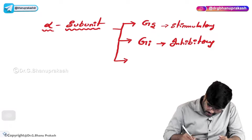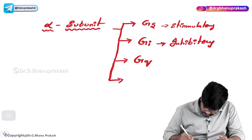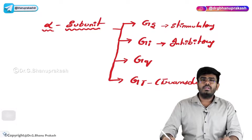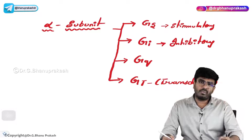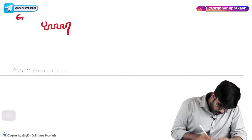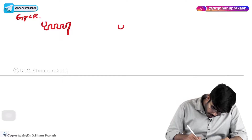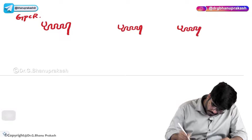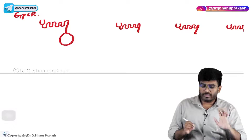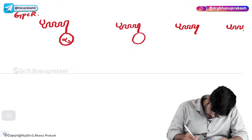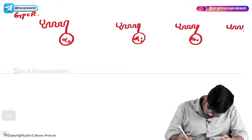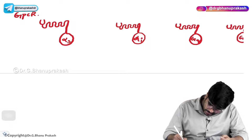So what is the importance of having different types of alpha subunits? Here I am showing you four different types of G protein coupled receptors. One is having alpha S or Gs — that is stimulatory. The second one is having Gi — inhibitory. The third one is having GQ. And the fourth one is having GT.